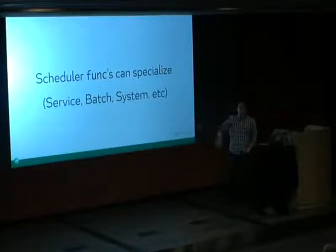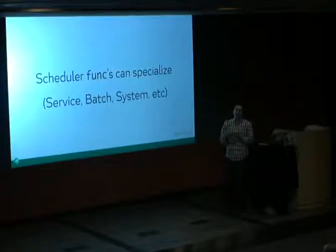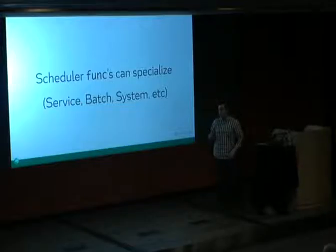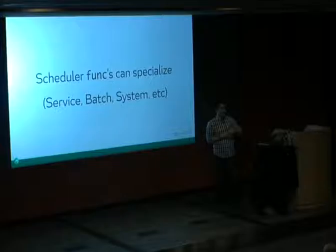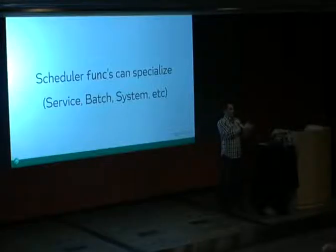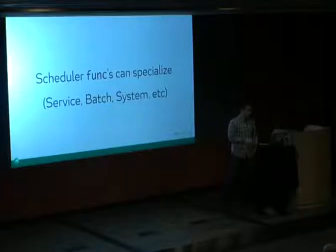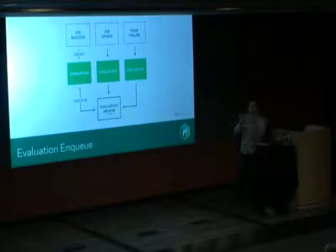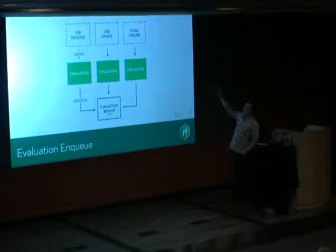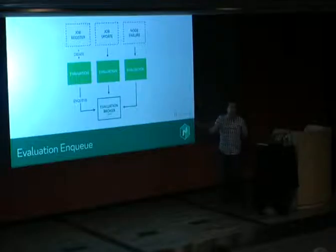Schedulers are basically a function turning evaluations into allocations. The function can be specialized — the 'system' type ensures the job runs on every machine. 'Service' keeps jobs running indefinitely and reschedules on failure — that's your web servers and microservices. 'Batch' jobs exit when complete: send an activation email, it exits with code zero, and the scheduler never reschedules it — zero allocation updates, job complete.